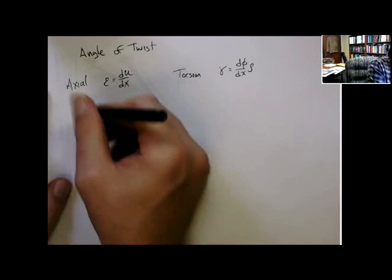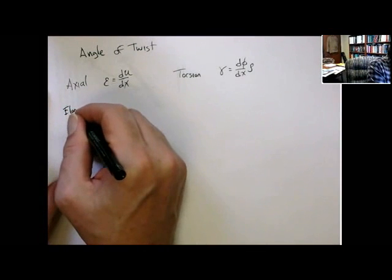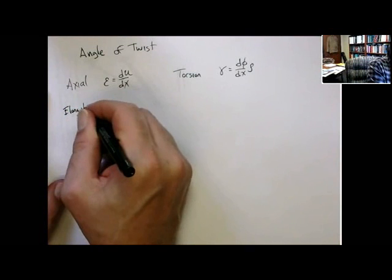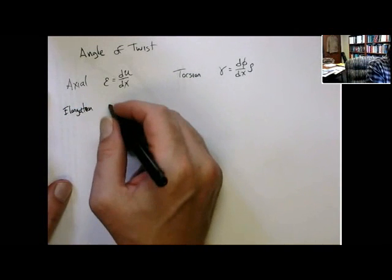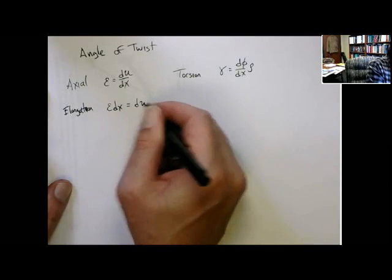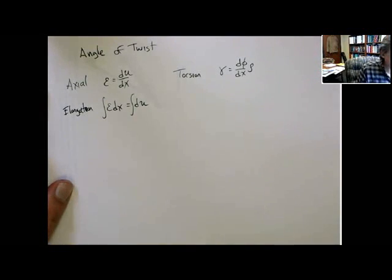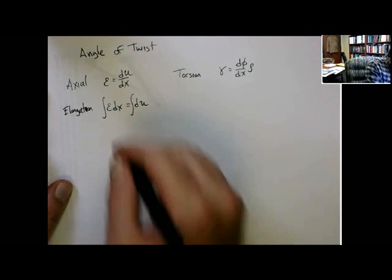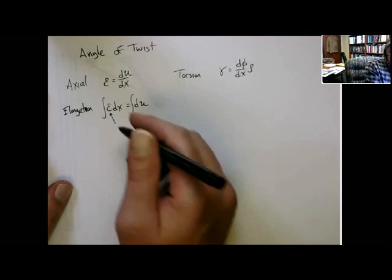Now, in the axial case, we then wanted to get a constitutive equation. And you integrate both sides. You have the view on the right hand side, and then we use a substitute view for the strain in terms of the displacement, you know, a little better than the geometry.